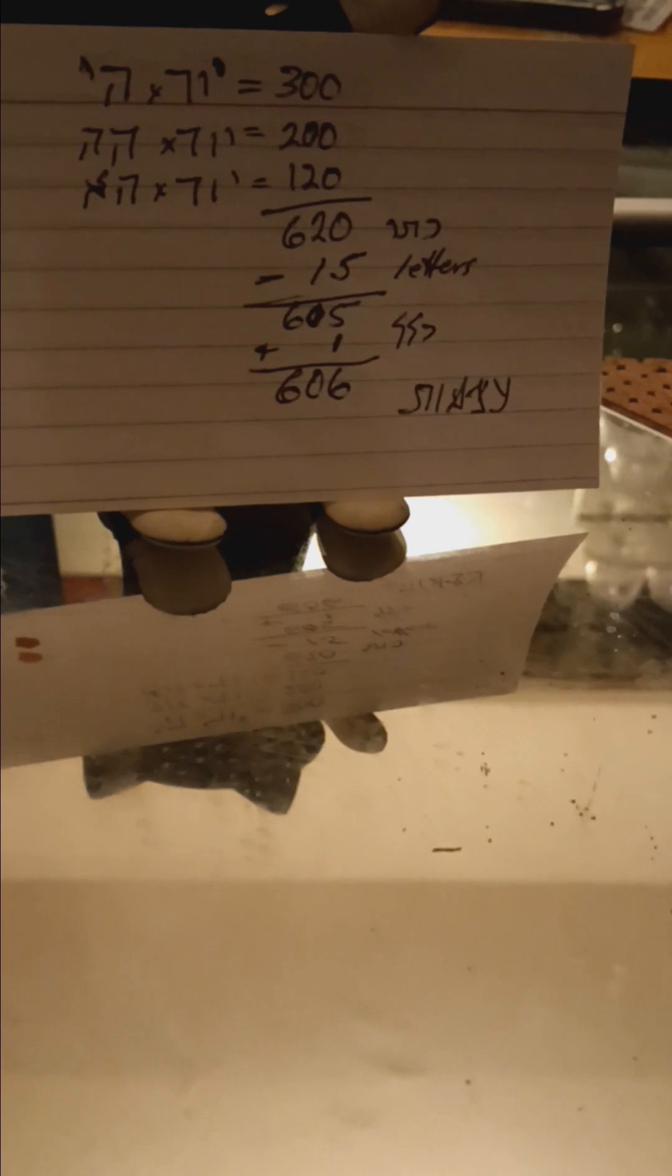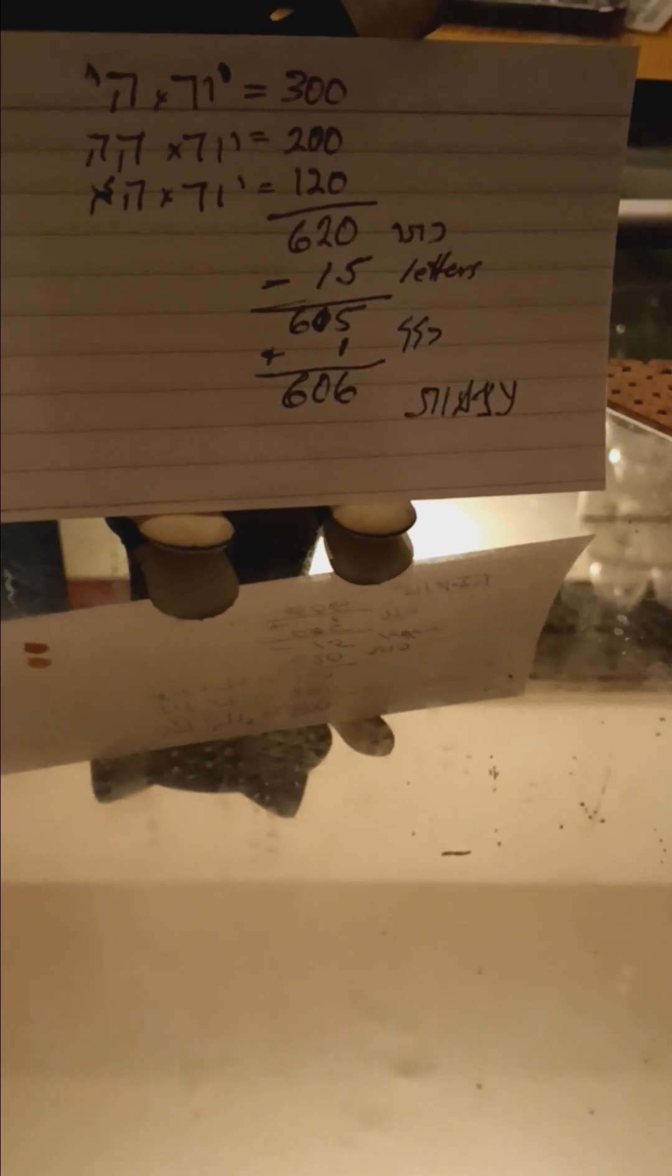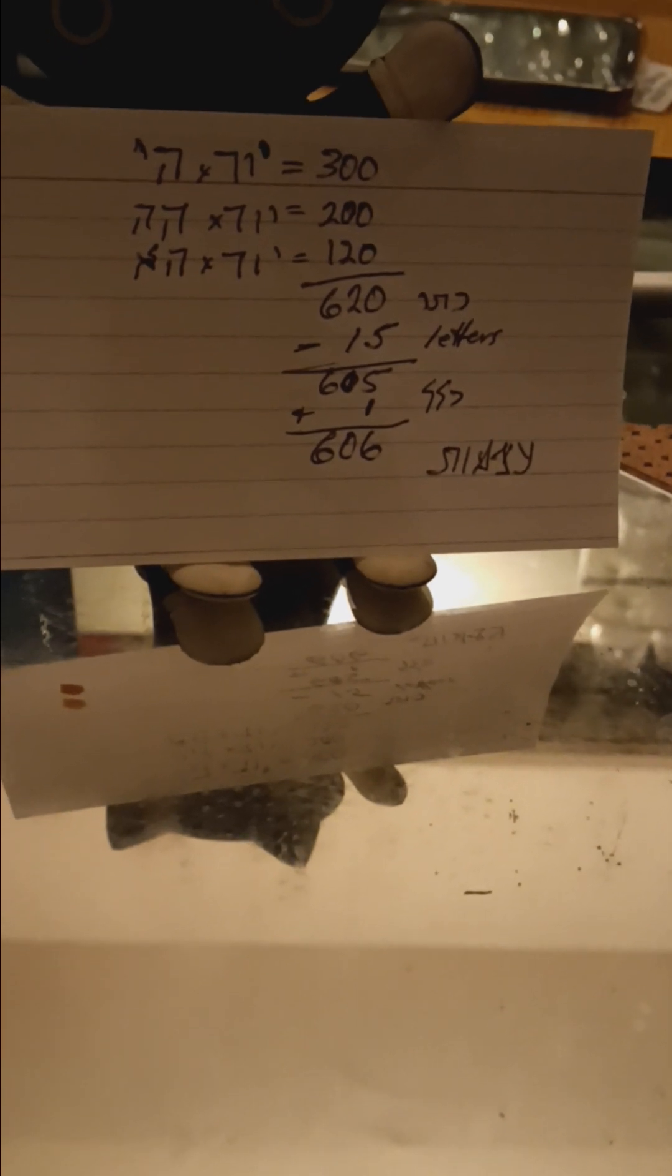And then we do a Yud times He of He, that's 10, that's 200. And then a Yud, which is 20, times He, which is 6, that's 120. So if you multiply Yud He in all its potentialities, you get 620, which is Keta.